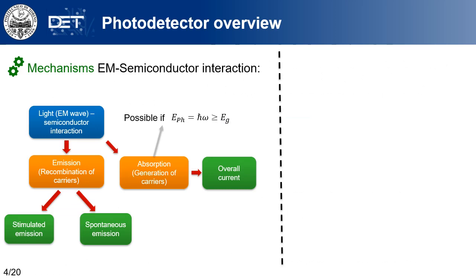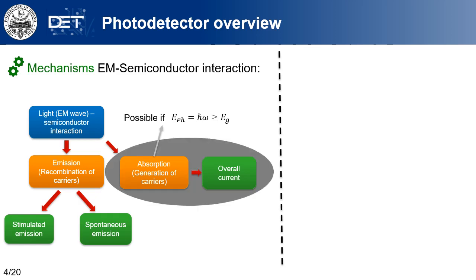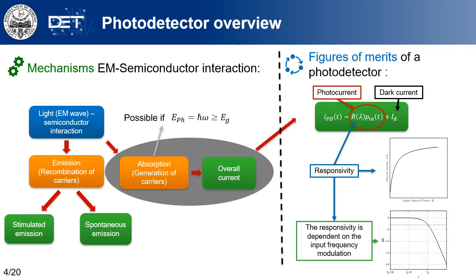The main mechanisms in electromagnetic wave–semiconductor interaction that allow the detector to convert light into a current are emission and absorption. The one of interest here is absorption, which is possible if the energy of the photon is higher than the energy gap of the semiconductor used as a detector. This mechanism is very important since it contributes to the overall current of the device. The figures of merit introduced are the responsivity and the cut-off frequency of the frequency response.